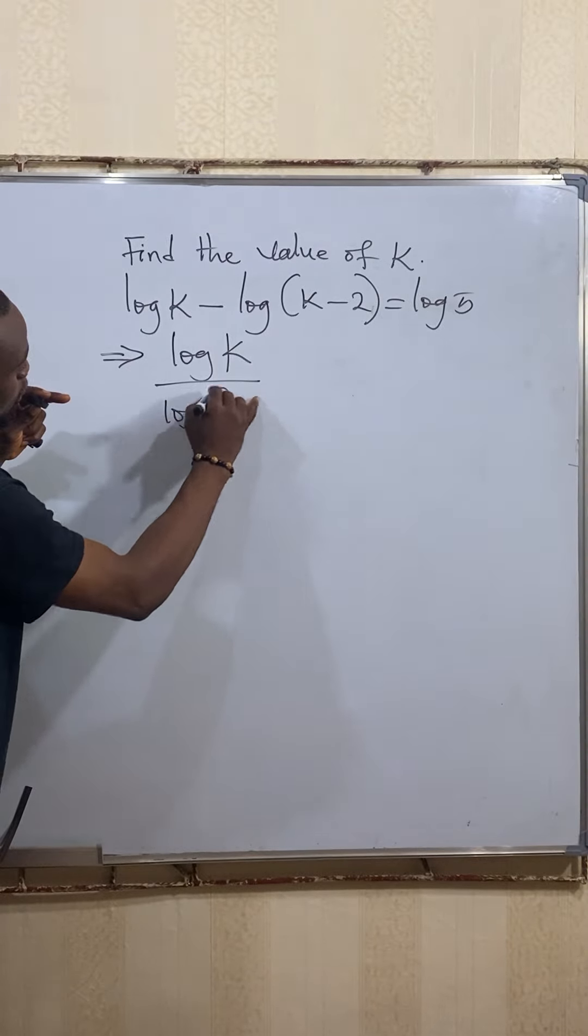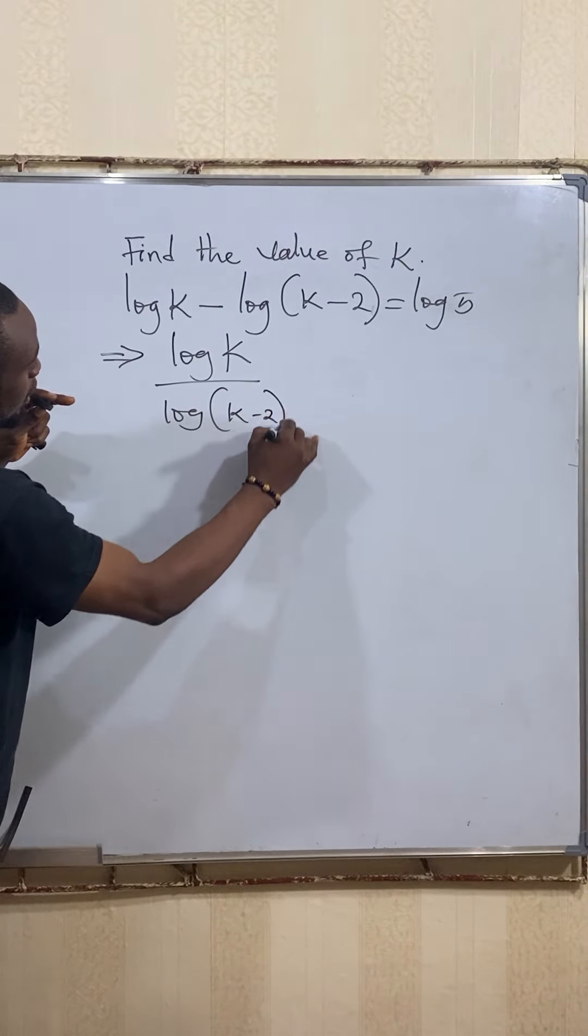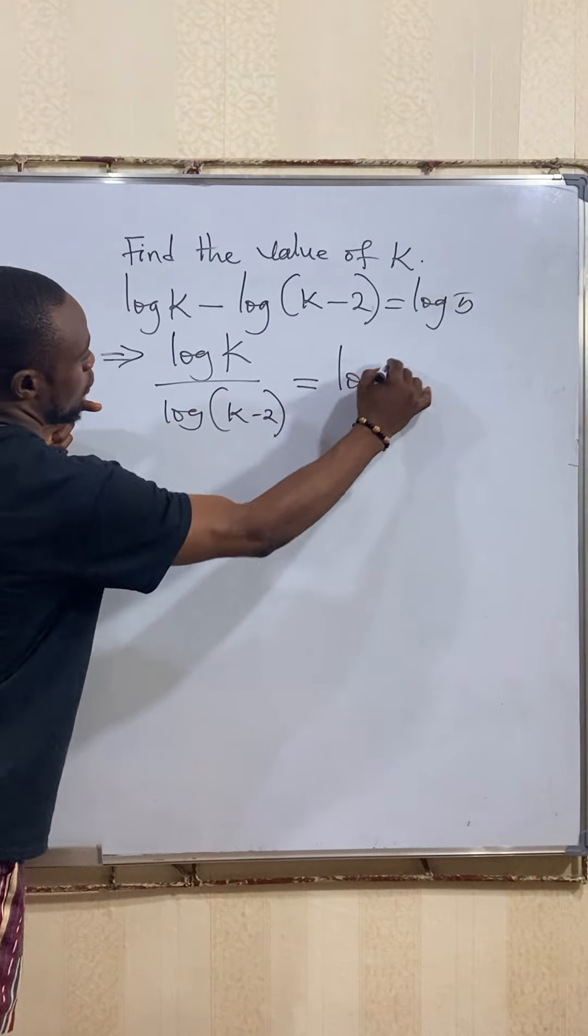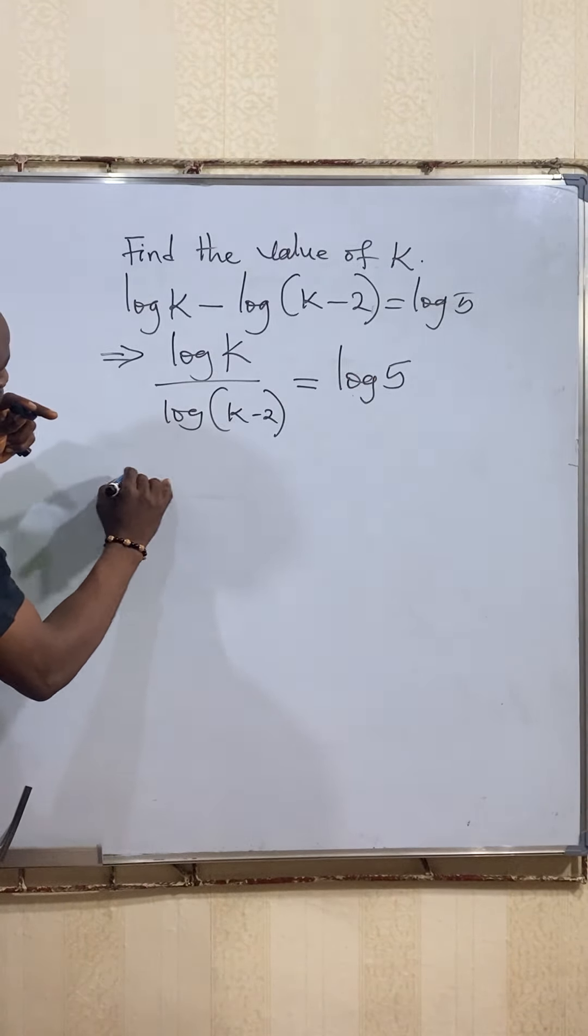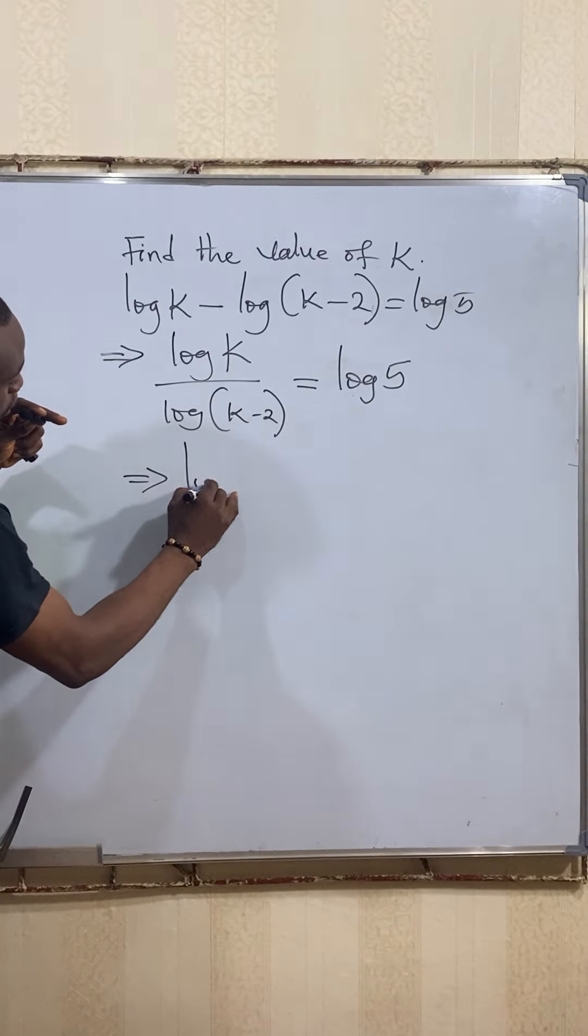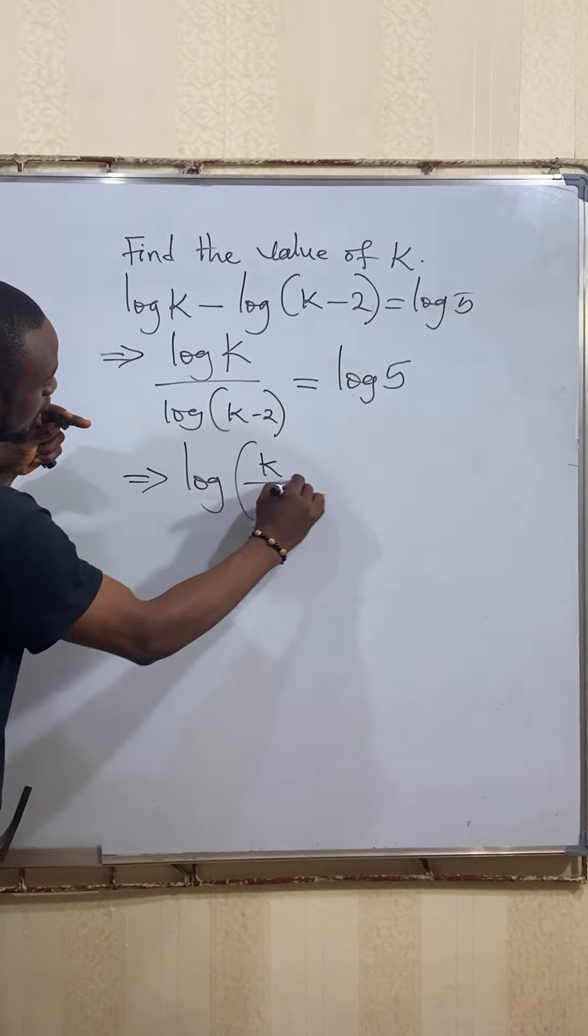Since we have log here and log here, we can factor out the log. So we now have log open bracket k over k minus 2 to be equal to log of 5.